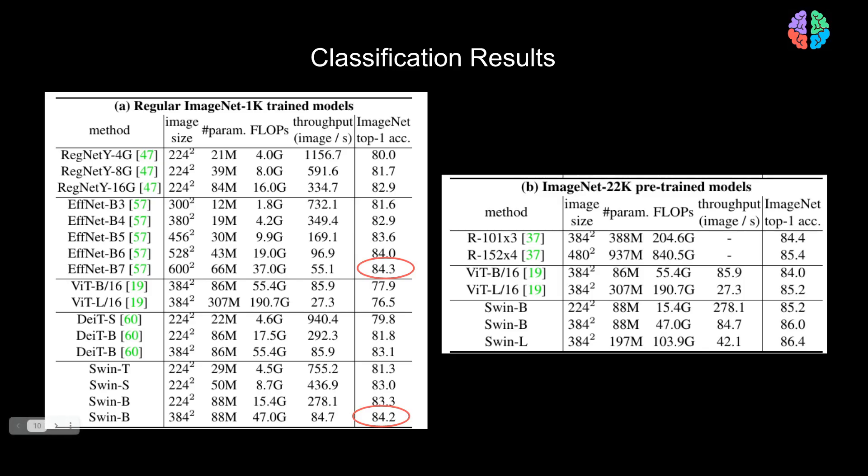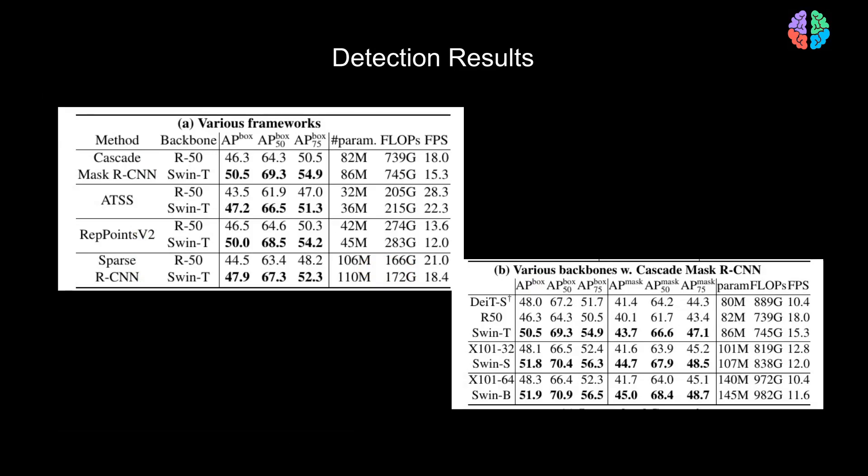For object detection, they show results on the COCO 2017 dataset. They also chose four typical object detection frameworks like Cascade Mask R-CNN, ATSS and Sparse R-CNN.